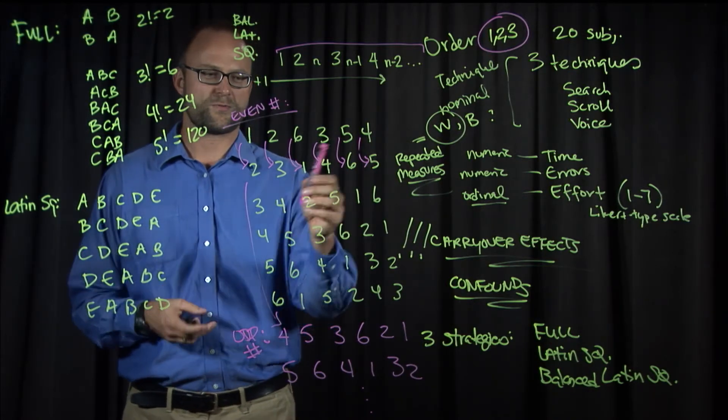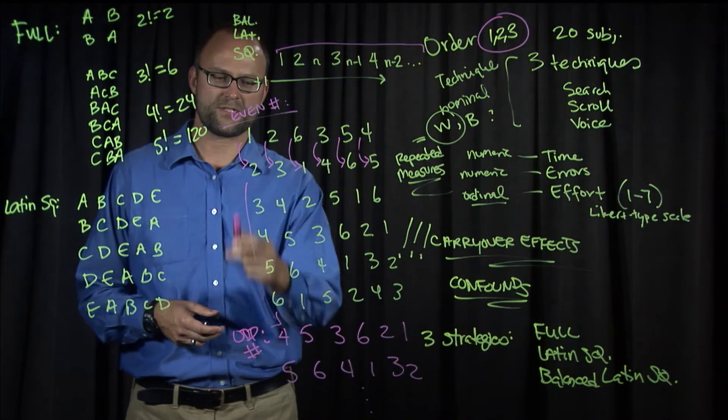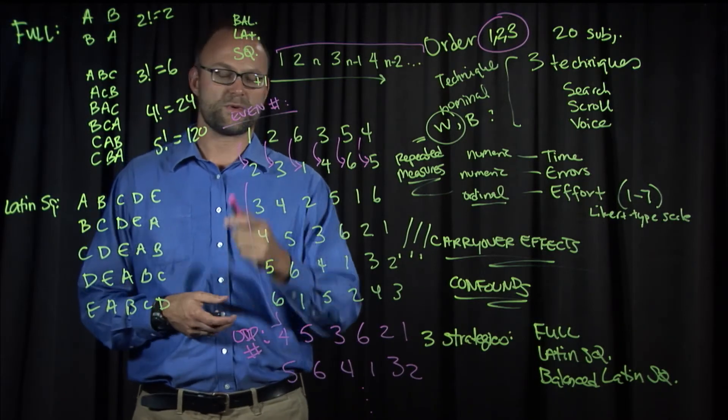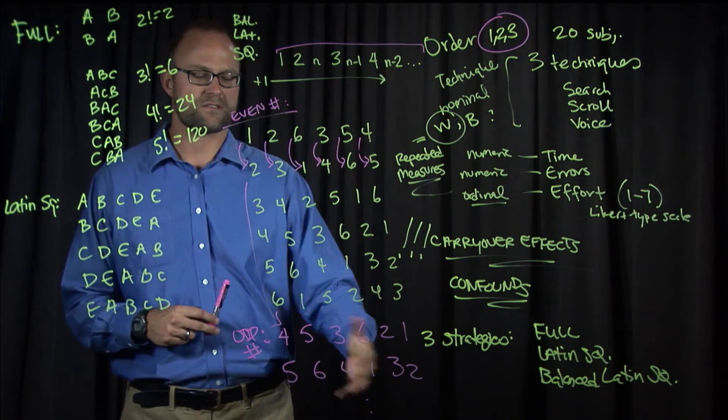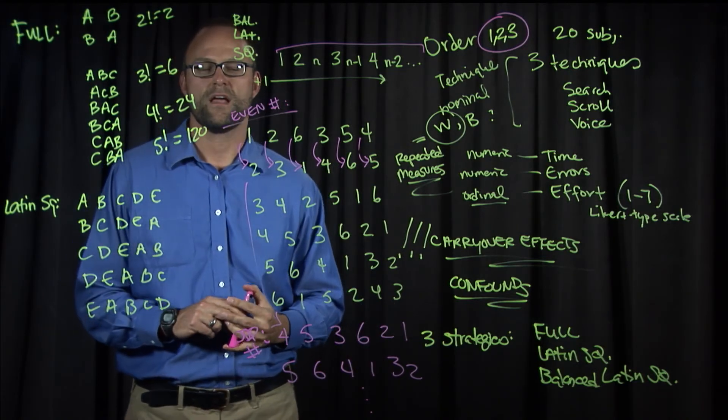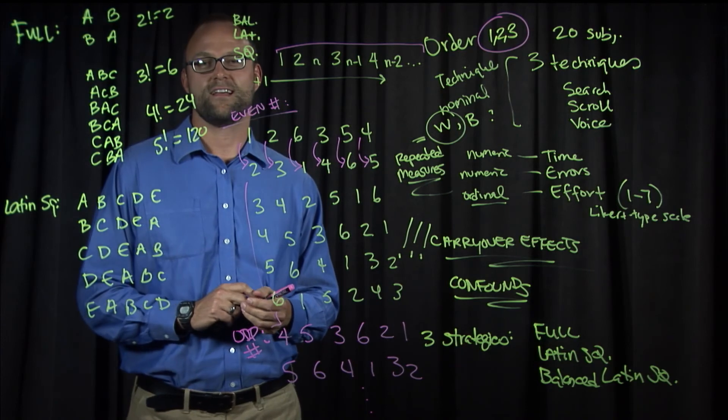And notice with six conditions, we'd need multiples of six subjects. With five conditions, we'd need multiples of not five, but ten, because we'd double our table with this sort of second half reversed. And that's how we create a balanced Latin square.